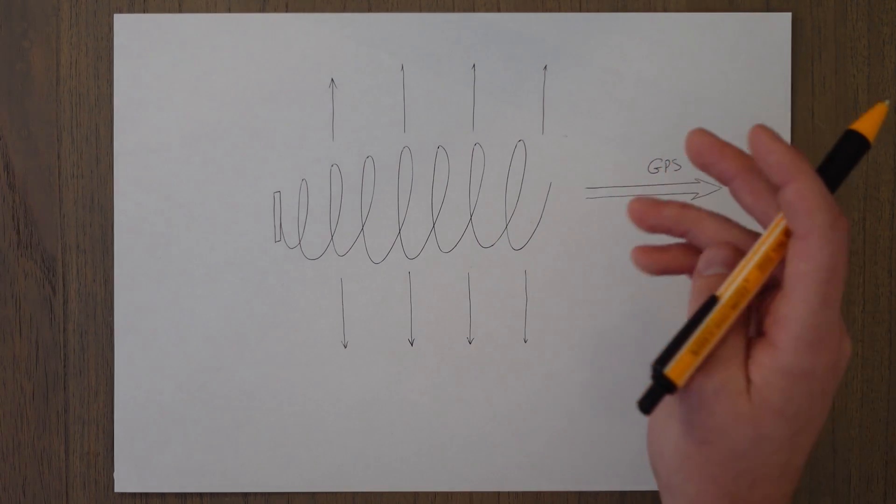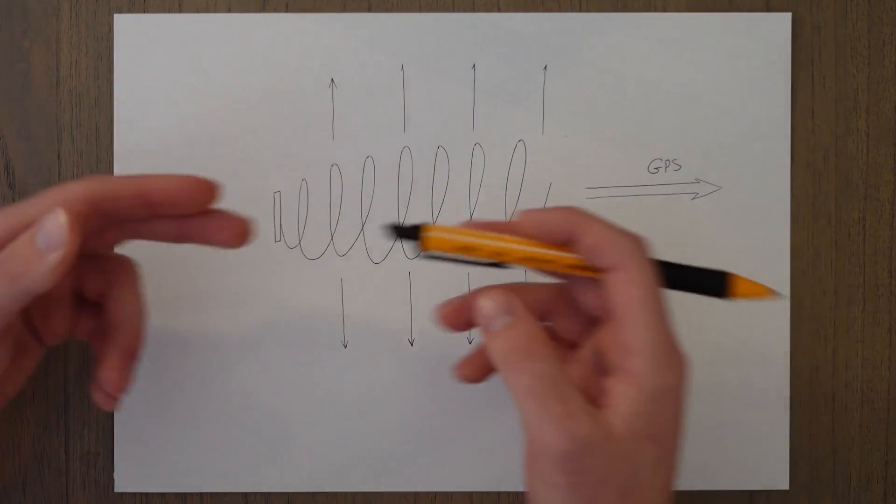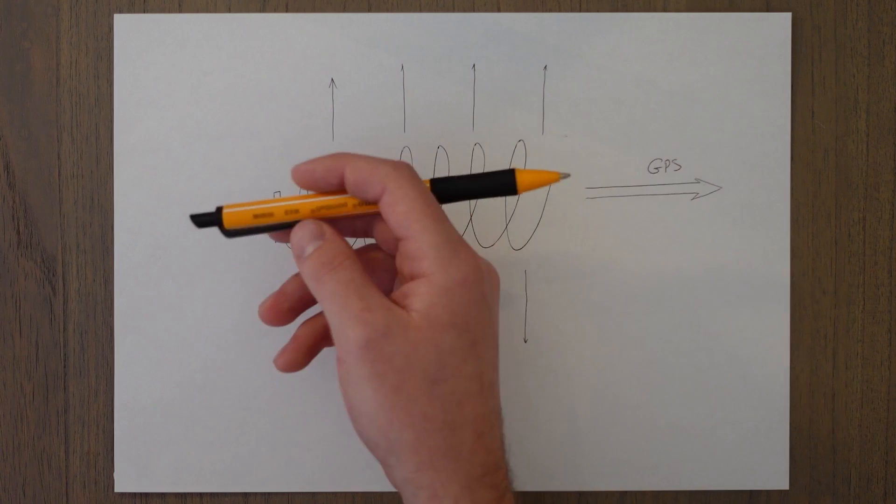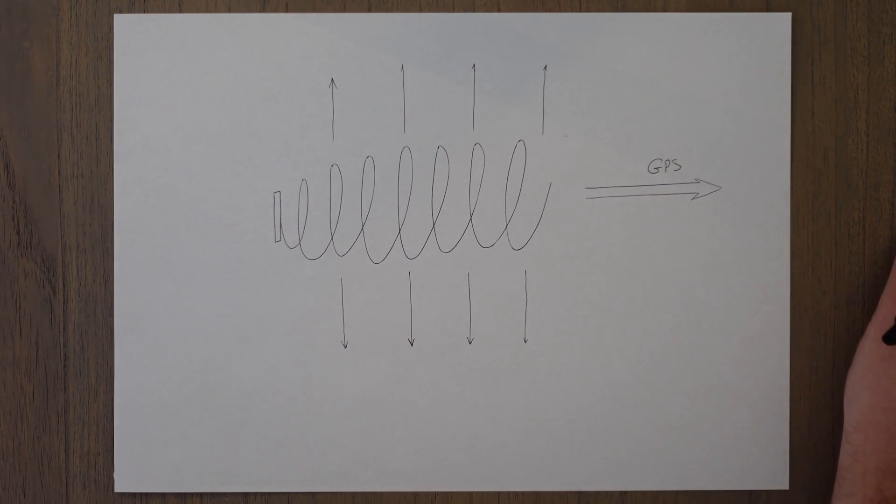The other mode of operation is used in what they call axial mode. You fire out a signal at the end, it's very directional and that's used exclusively with GPS.